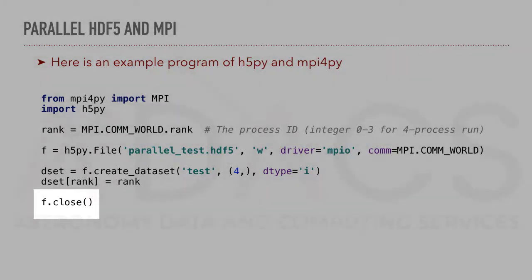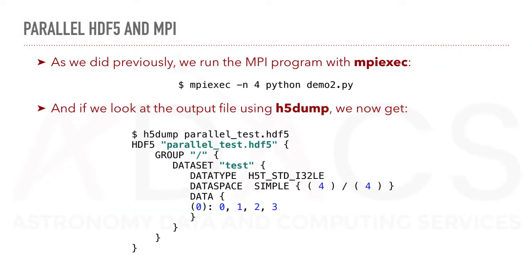And finally, close the file. As we did previously, we run the MPI program with mpiexec specifying 4 processes. And now, if we look at the output file using h5dump, we get the following.